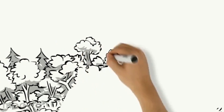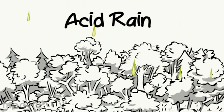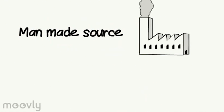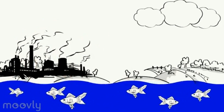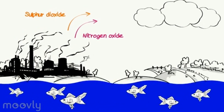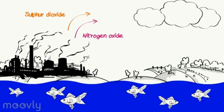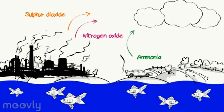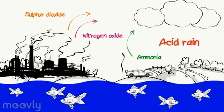First thing, I want to talk about acid rain. Acid rain is caused by air pollution. It is made by main sources — sulfur dioxide, nitrogen oxide, and ammonia — that are released from factories by humans and combined with water vapor to produce acid rain.